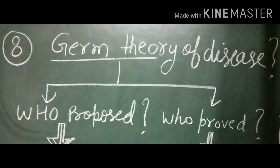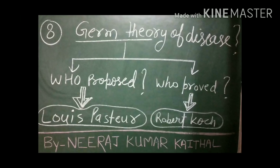Question number eight is related to the germ theory of disease. Who proposed the germ theory of disease, and who proved it? Louis Pasteur is the person who proposed the germ theory of disease, and Robert Koch was the person who proved this theory.